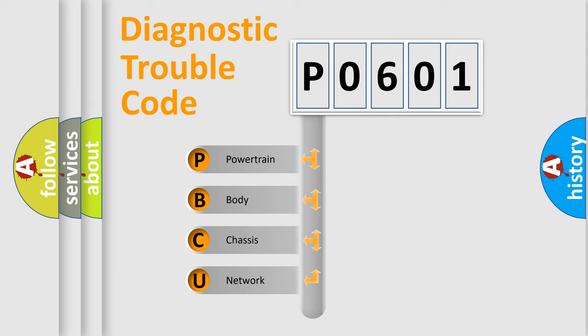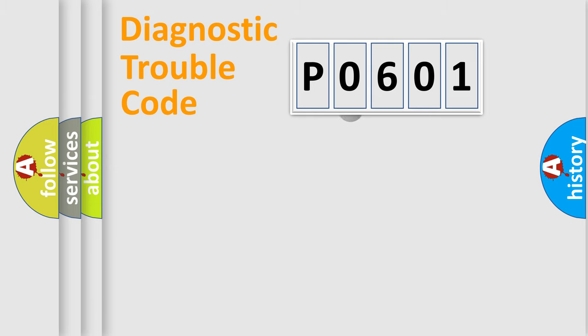We divide the electric system of automobile into four basic units: Powertrain, Body, Chassis, and Network. This distribution is defined in the first character code.